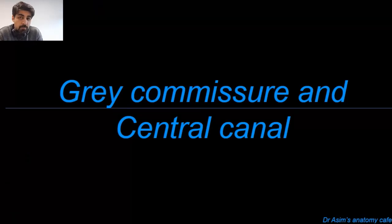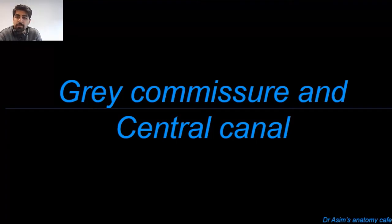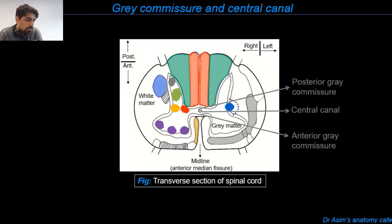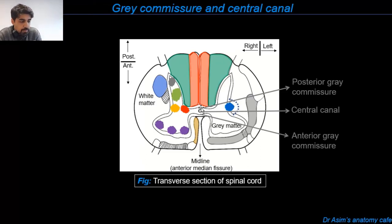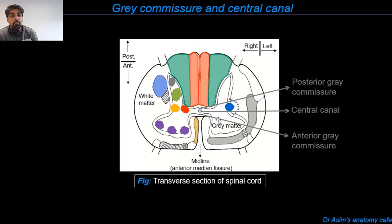Now let's briefly discuss the gray commissure and the central spinal canal. The gray commissure is a thin strip of gray matter surrounding the central spinal canal, along with the anterior and posterior white commissures. It connects the two lateral halves of the cord — the gray horn on the right side with the gray horn on the left side — and it comprises lamina 10 in the Rexed classification.